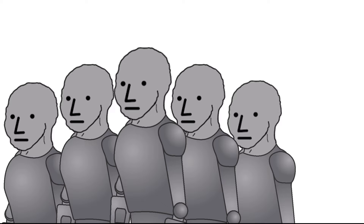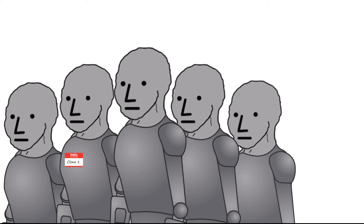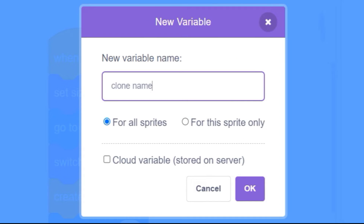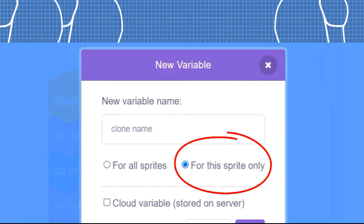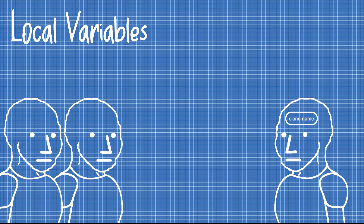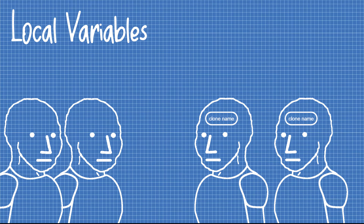To give these clones their own identity, I need to stamp each of them with a unique name tag that will let me tell them apart from each other. Let's create a variable called "clone name." But before hitting OK, I need to click the option that creates the variable for this sprite only. This creates something called a local or private variable — a variable that can be seen by one sprite but is invisible to all the other sprites in your project. What makes local variables incredibly useful when working with clones is that creating a copy of your sprite also creates a copy of your variable.